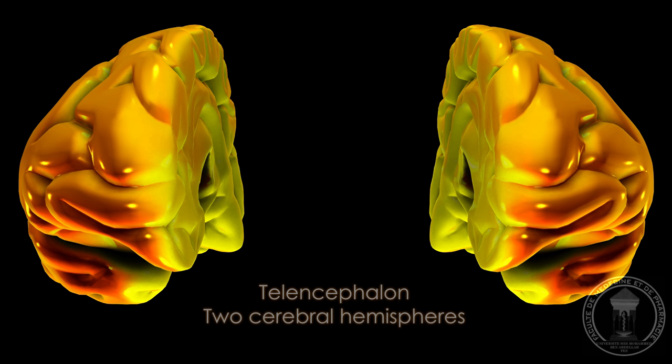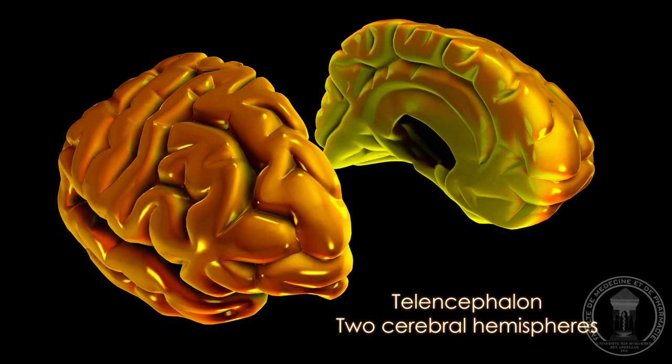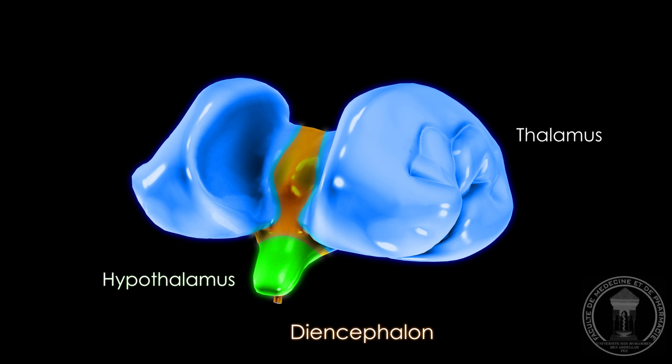The human brain includes a forebrain, made of two hemispheres, almost symmetrical, left and right, and a diencephalon — a medial and single part that includes the thalamus and the hypothalamus.